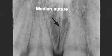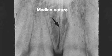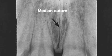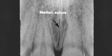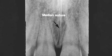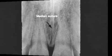The arrow points to the radiolucent line called the median suture. This is where the right and left sides of the maxilla join.